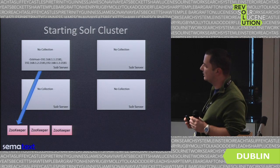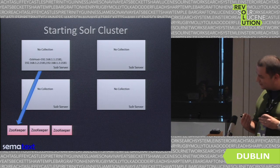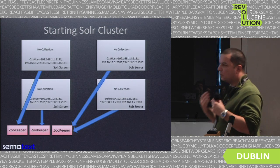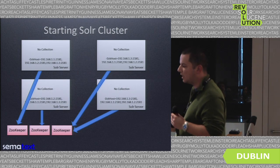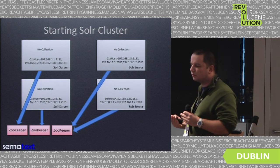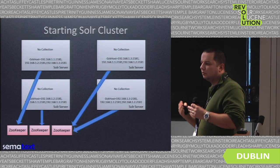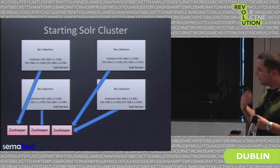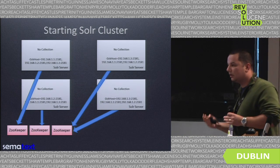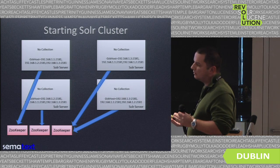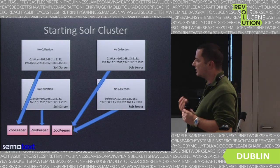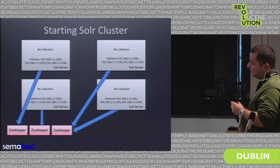One thing to remember is that in order to have high availability, we need at least three ZooKeepers. ZooKeeper needs a quorum to operate — a quorum is at least 50% plus one server. You can have a single ZooKeeper server, but if it fails, your cluster stops working. With three ZooKeeper servers, you are allowed to have one fail and your cluster will still be operable. With five ZooKeeper servers, you can have two failed nodes. The key point is that you need an odd number of ZooKeeper servers and at least 50% plus one of them for your cluster to work.